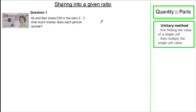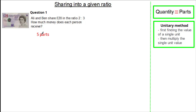In this question, Ali and Ben share £20 in the ratio of 2 to 3. We're asked to calculate how much each person receives. We know Ali gets 2 parts and Ben gets 3 parts, so we have a total of 5 parts.